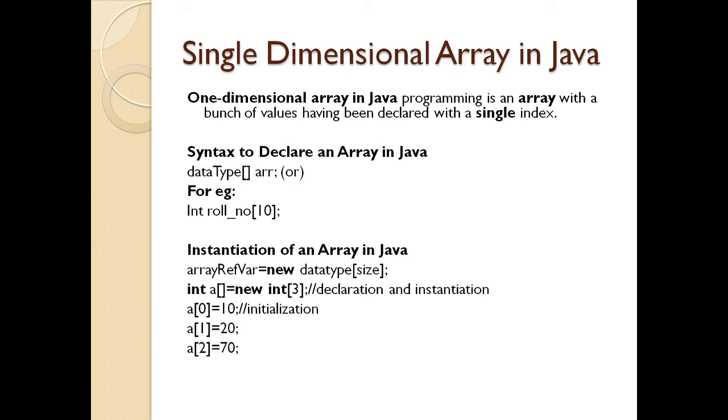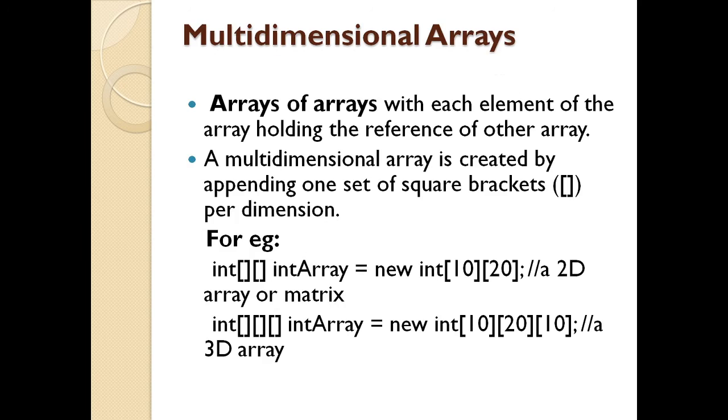Now see single dimensional array in Java. One dimensional array in Java programming is an array with a bunch of values having been declared with a single index. Now look at the syntax to declare an array in Java. First you write what is the data type, you have the square brackets and the array name. For example int is a data type, I want to store the role number, so I write the variable name role number and what should be the size of the array. Here I have mentioned 10, you can even skip this. Now we will see how we can instantiate an array in Java. For instantiating of array, I have declared an array A with size 3 and then I am initializing the values. For 0th position I want 10, for 1st position I want 20, for 2nd I want 70 and so on.